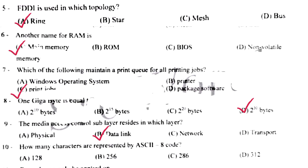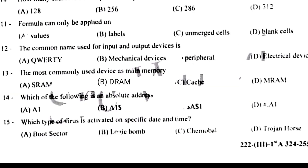1 gigabyte is equal to 2 to the power 30 bytes. The media access control sublayer resides in which layer? Data link layer. How many characters are represented by ASCII? 256.